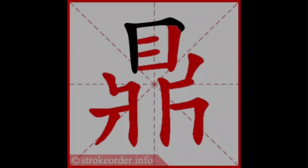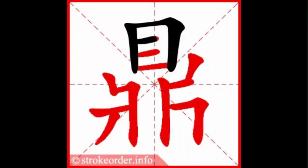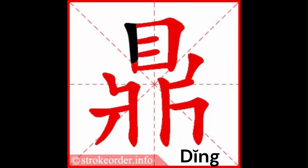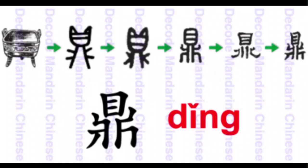In today's video, we'll teach you the Chinese character for cauldron, pronunciation: Ding. This is a fun character in the Chinese language because the character Ding was originally a three-legged bronze cooking cauldron that gradually morphed into its modern form. This makes it easier to learn.